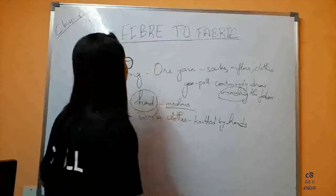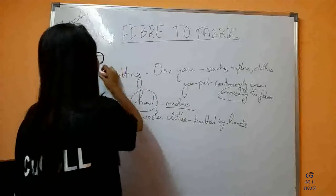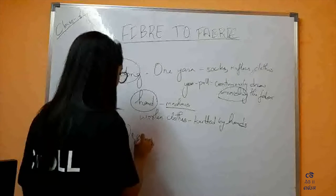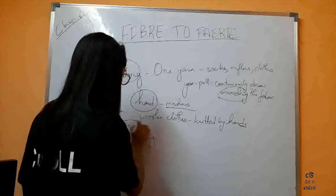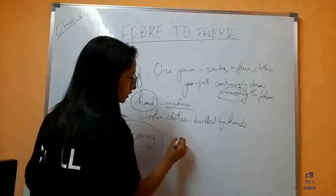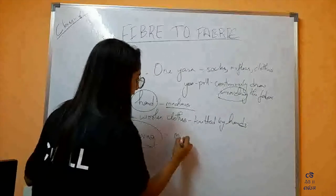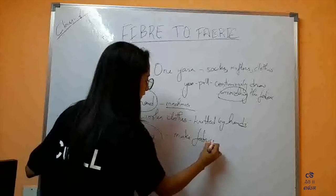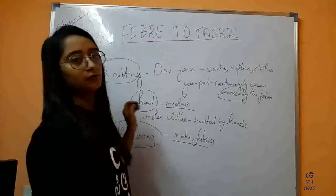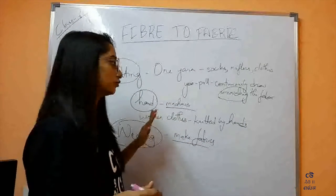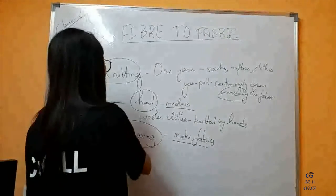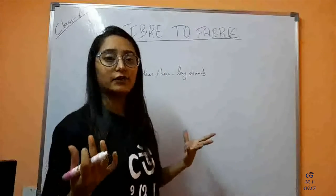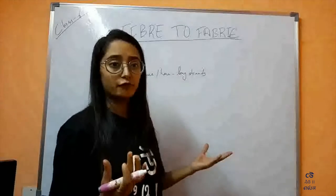Now as we have completed knitting and weaving, we know that these are the two processes used to make fabrics. Whatever fabric material or cloth we have is usually the product of weaving and knitting. So we now have the idea of how a fabric is formed.